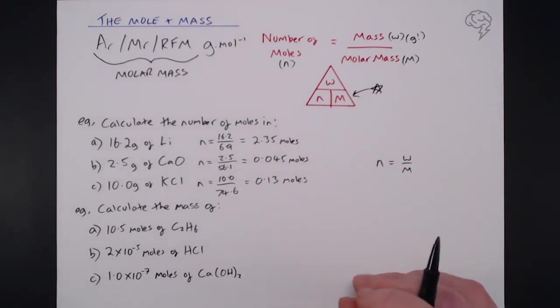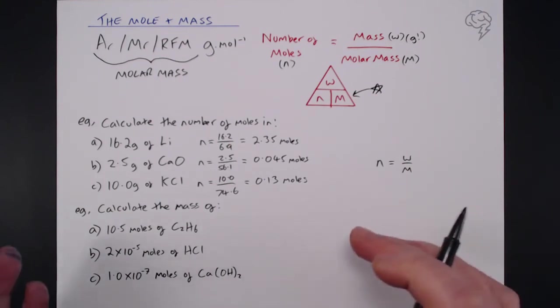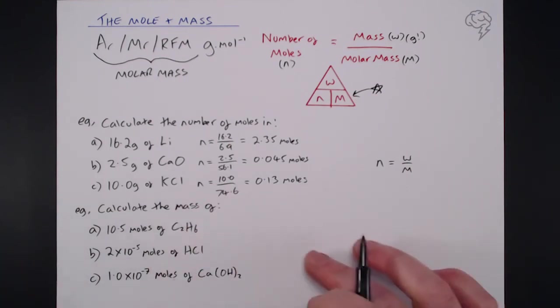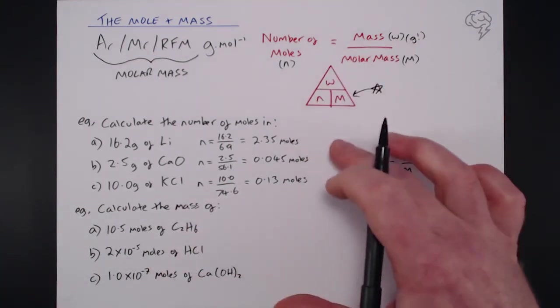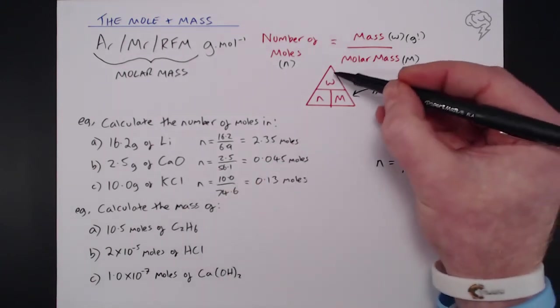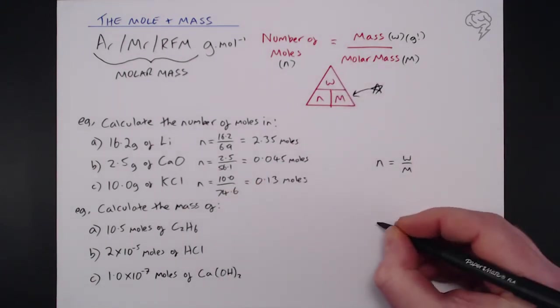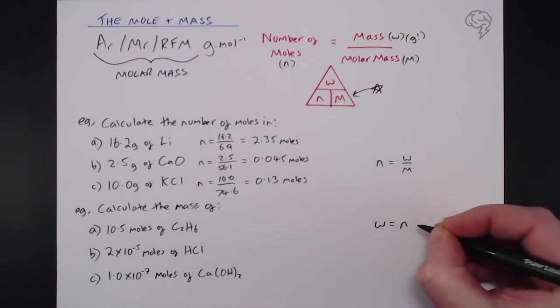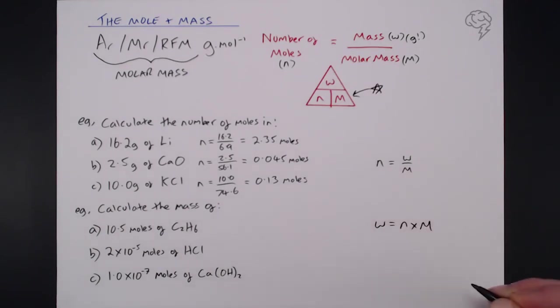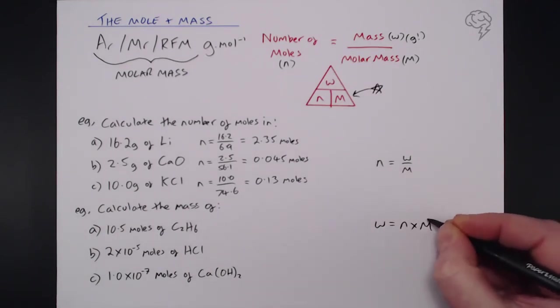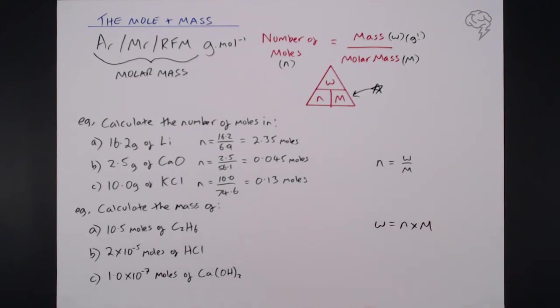So of course in these questions what we're going to have to do is rearrange this equation up here to actually focus on mass. So mass equals number of moles times molar mass, and again we've always got access to this in our periodic table so here are your answers.